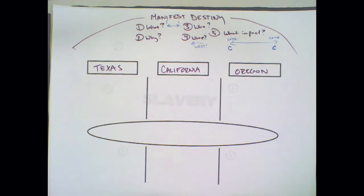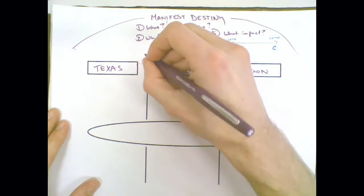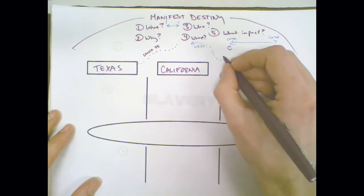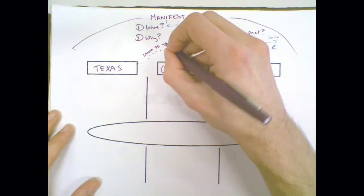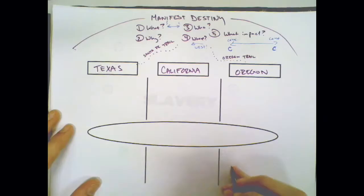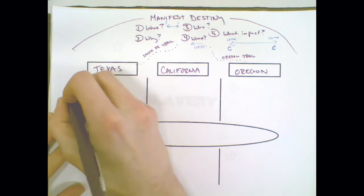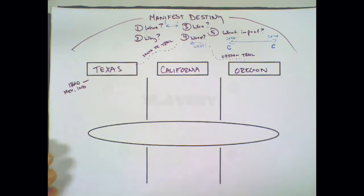This idea of Manifest Destiny causes America to expand primarily in three places. We've got two real paths that we need to know about. First is the Santa Fe Trail, which takes us to Mexico, and then the Oregon Trail, which takes us to Oregon. Let's focus first on Texas.